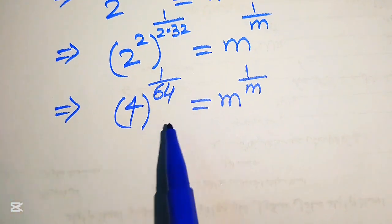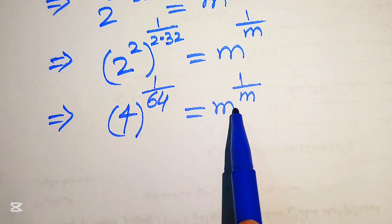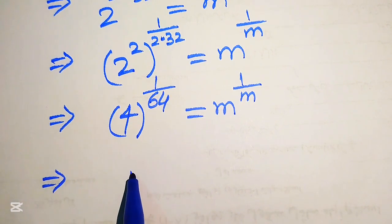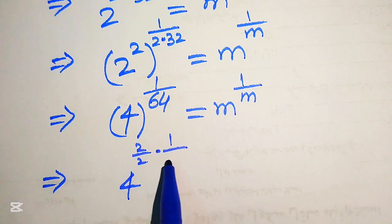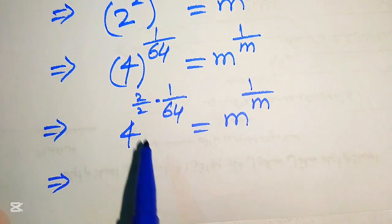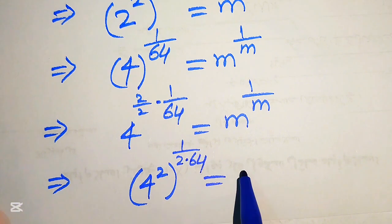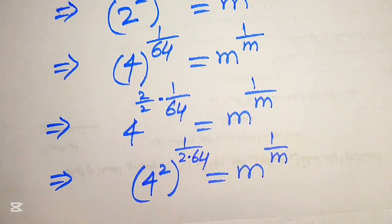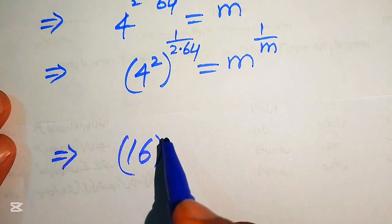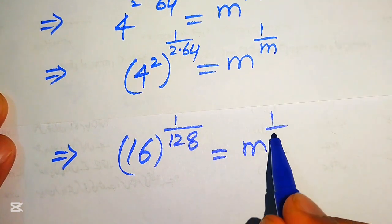We can repeat this process again until we get the exponent as the reciprocal of its base. So we again multiply the exponent of 4 and divide by 2: 2 over 2 into 1 over 64 equals to m to the power of 1 over m. We move this 2 inside the term, written as 4 squared, and multiply 2 times 64. We know 4 squared equals 16, and 2 times 64 equals 128, giving us 16 to the power of 1 over 128 equals to m to the power of 1 over m.